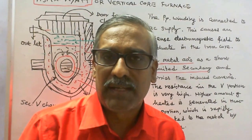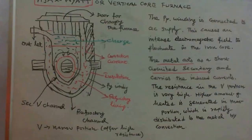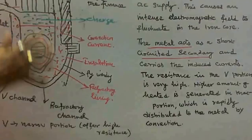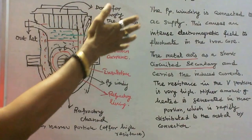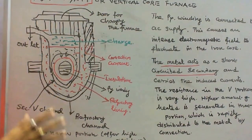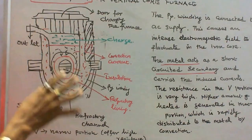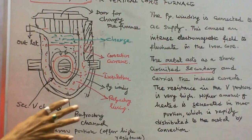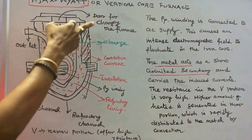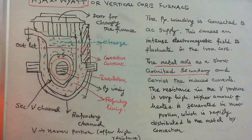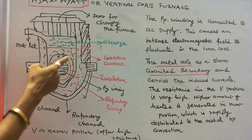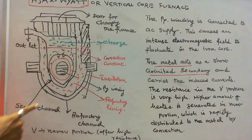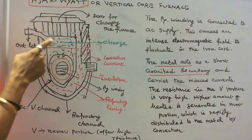Now we will see its operation. This is a cross-sectional view of the Ajax-Ward Furnace, also called the Vertical Core Furnace. It is a low frequency furnace and another type of direct core furnace. Here, this is a door for charging the furnace, this is the charge, this is a convection current, and this is the primary winding. The charge acts as a secondary.